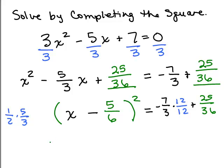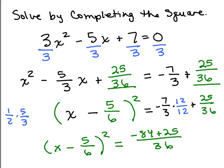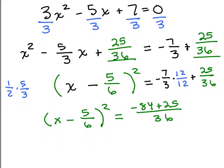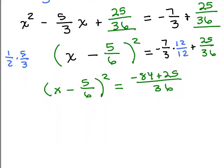So this gives me x minus 5 sixths squared equals, well, I've got negative 7 times 12. So that's going to be negative 84 plus 25 all over 36. I'm just showing all the steps here. So we have x minus 5 sixths squared equals, we're still going to simplify. This will give me a negative number here. That's negative 59 over 36.